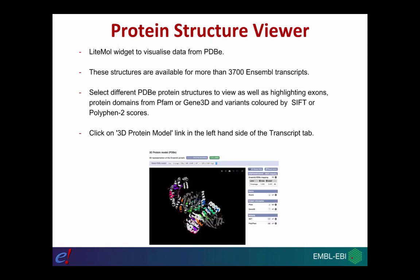The final thing I want to talk about is the protein structure viewer. This is a new feature that we've been working on, coming from our colleagues at PDBe. We've included a LiteMol widget to visualize protein structure data for transcripts you might be interested in studying. At the moment we have structures available for more than 3,700 different Ensembl transcripts. You can select different PDBe protein structures to view, manipulate the view, show protein domains from PFAM or Gene3D, and view variants colored by SIFT and PolyPhen scores. You access it by clicking on the 3D protein model link in the left-hand menu of the transcript tab.